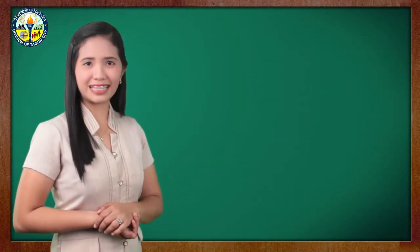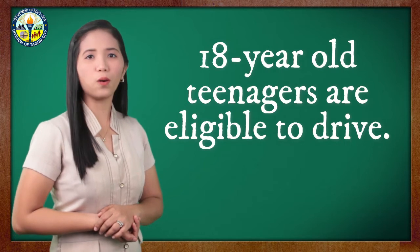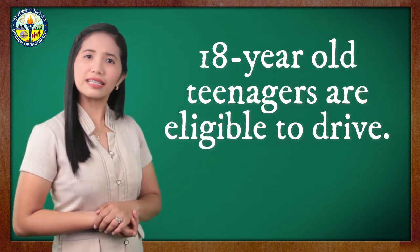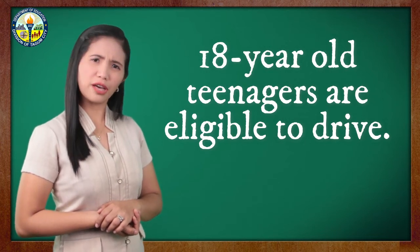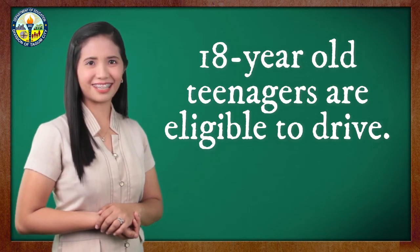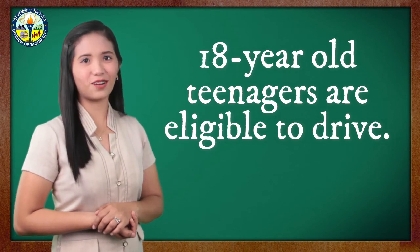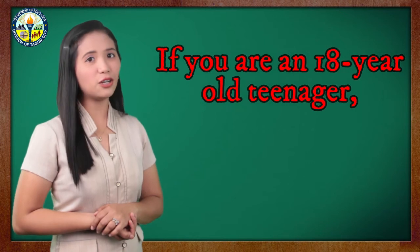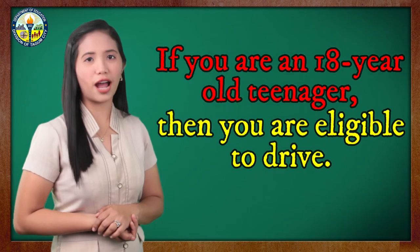What about this statement: '18 year old teenagers are eligible to drive.' The statement is not in the if-then form. What do you think is its corresponding if-then statement? Very good! Your answer is correct: If you are an 18 year old teenager, then you are eligible to drive.